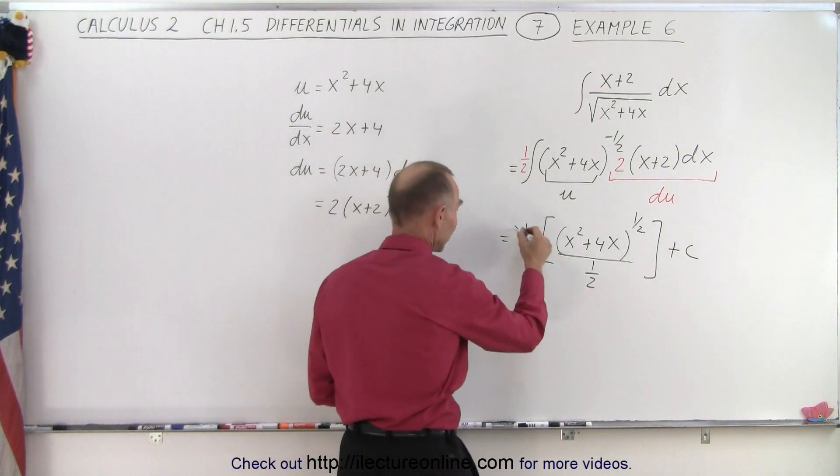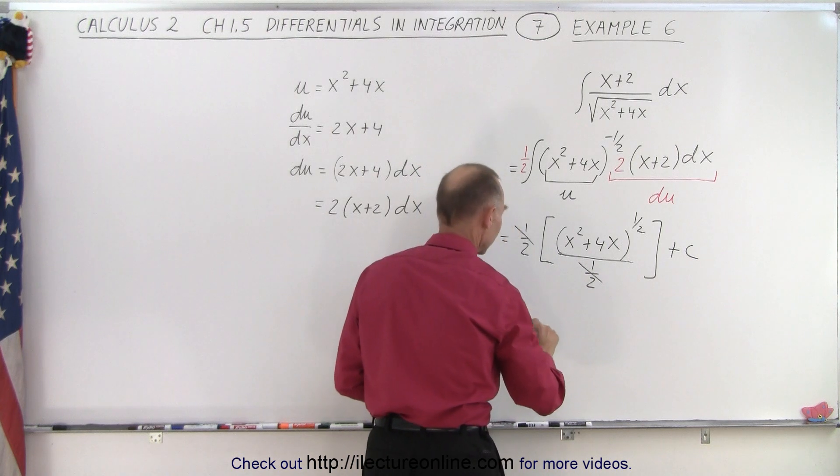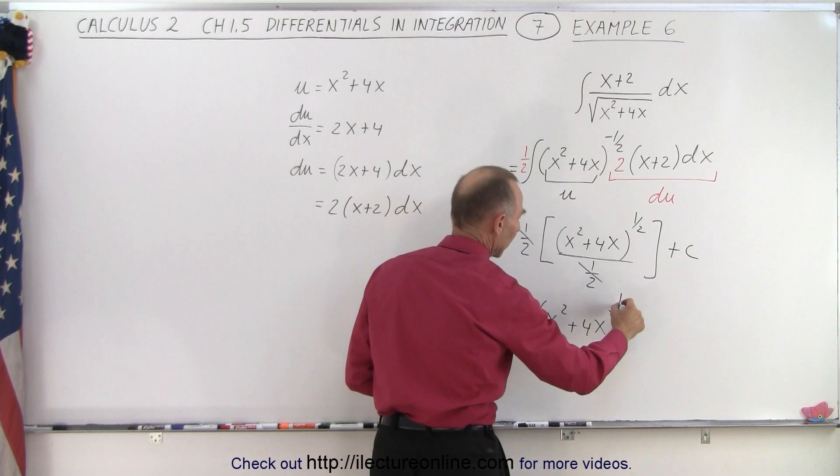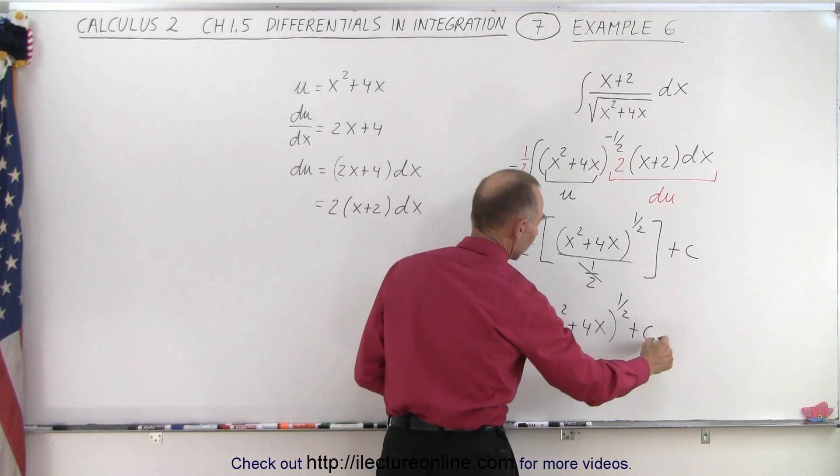And then we can see that this one half will cancel out this one half, so this simply becomes the quantity x squared plus 4x to the one half power plus a constant of integration.